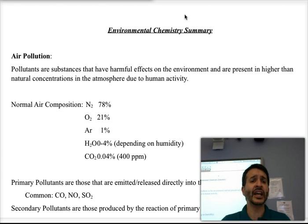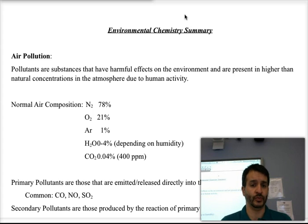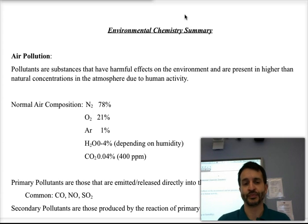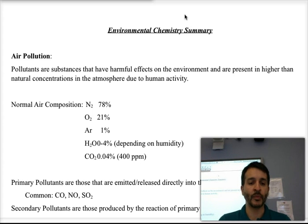An air pollutant is any substance that is present in the atmosphere in greater than its natural concentration. That's basically what a pollutant is. Air is composed of 78% nitrogen, 21% oxygen, and the rest is a mixture of different components, including water vapor, carbon dioxide, and a little bit of argon.